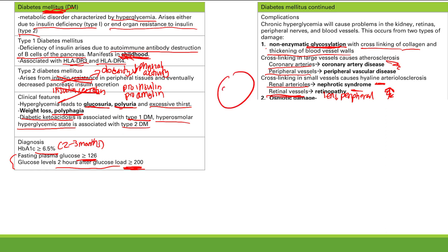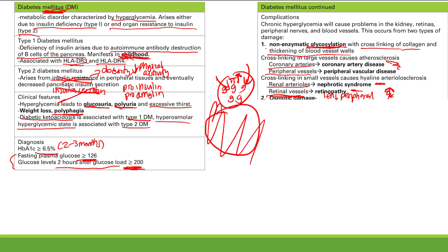With all this glucose inside the cell, osmotic pressure is going to be very increased. Water always goes from low to high osmotic pressure, so water rushes in. You get ballooning of the cell and then the cell ruptures — osmotic rupture. In the lens, osmotic rupture leads to cataracts. In the peripheral nerves, osmotic rupture contributes to neuropathy.